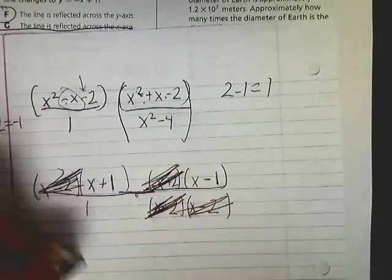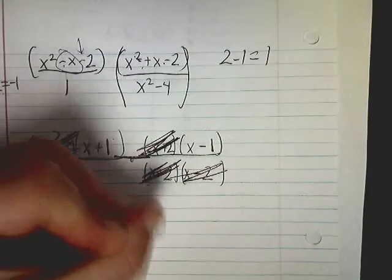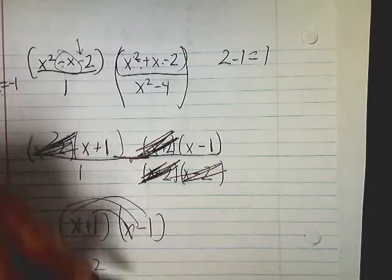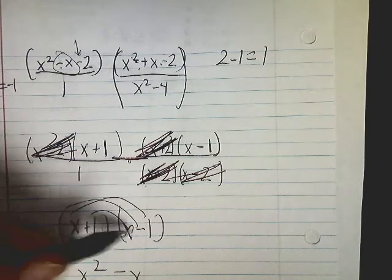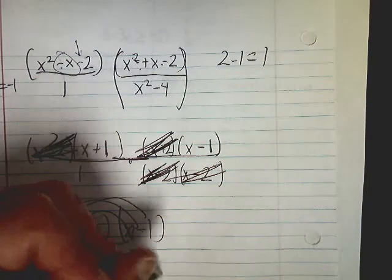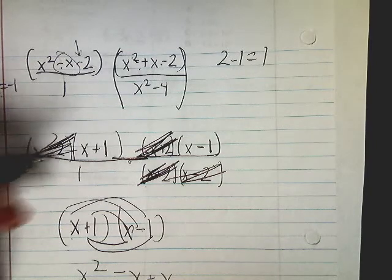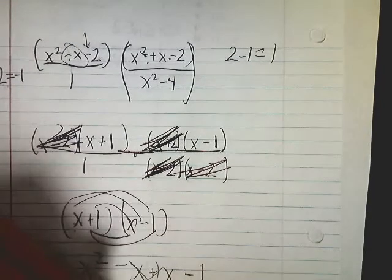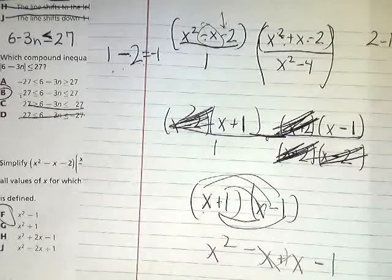So what I end up with is x plus 1 times x minus 1. And then I can just use FOIL to work it. I jumped ahead there. x times x is x squared. x times negative 1 is negative x. 1 times x is positive x. And 1 times negative 1 is negative 1. These cancel, so you get x squared minus 1, which is F, conveniently enough.